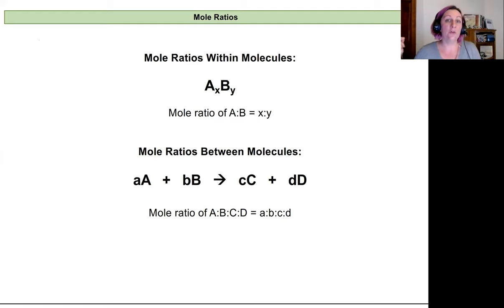We've got two versions of mole ratios in chemistry. One is the mole ratio within a molecule, encompassed in the subscripts. This tells us how many atoms of A and B make up one molecule, or how many moles of A and B make up a mole of that molecule. I can determine how much I have of A or B if I know one or the other and that ratio.